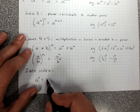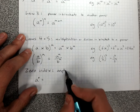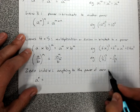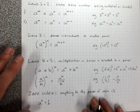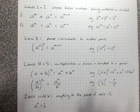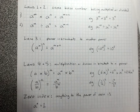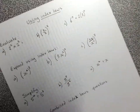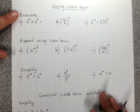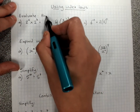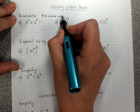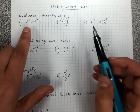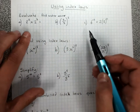The zero index rule: anything to the power of 0 equals 1. So a to the 0 equals 1. That covers all the laws, explained and revised. We need to be able to use the index laws at any time. There are some words we need to know: evaluate means find a number answer. If the index laws question asks you to find a number answer, use your index laws and then your calculator if needed.